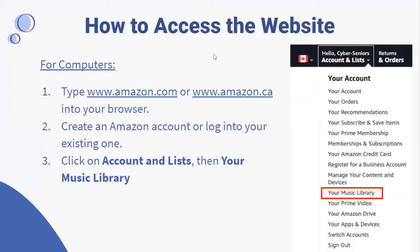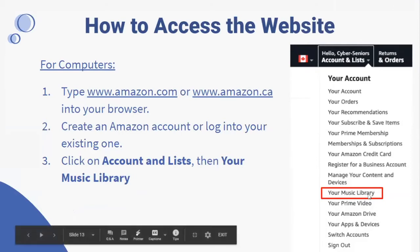How to access the website on computers: go to Amazon.com if you're in the States or Amazon.ca for Canada. Create an Amazon account or log into your existing one. Then click on 'Account and Lists' at the top of your screen and go down to see your music library.